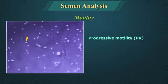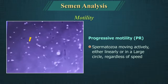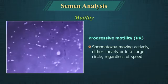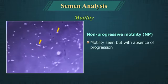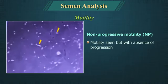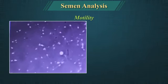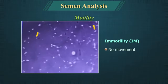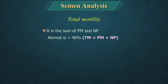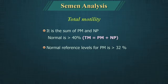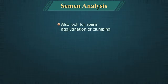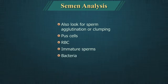Counting can be done using an eyepiece reticle or disc to reduce the field size for easier counting. Motility is graded as: Progressive motility — spermatozoa moving actively either linearly or in a large circle regardless of speed; Non-progressive motility — spermatozoa showing motility but with absence of progression, for example moving slowly in small circles or only a flagellar beat; Immotility — spermatozoa showing no movement whatsoever. Total motility is the sum of progressive and non-progressive motility and should be more than 40%. The normal reference level for progressive motility is more than 32%. Also look for sperm agglutination or clumping, pus cells, RBCs, immature spermatozoa, bacteria, trichomonas, etc.